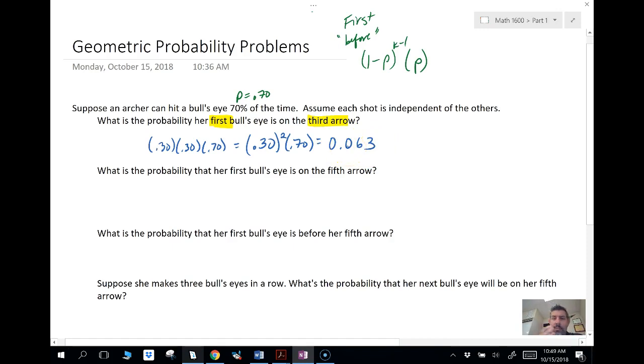Let's take a look at the same sort of situation. What is the probability that her first bullseye is on the fifth arrow? So miss, miss, miss, miss. Four misses, then finally she makes it. So four misses, 0.3 to the fourth, times finally a make. That's going to be 0.005567.